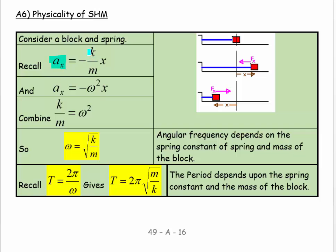We know that the acceleration at any given position is equal to minus k over m times x, the position. And we just figured out that the acceleration at any position is equal to minus omega squared x.